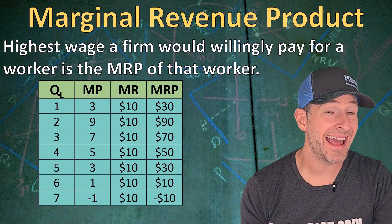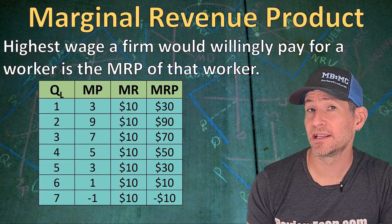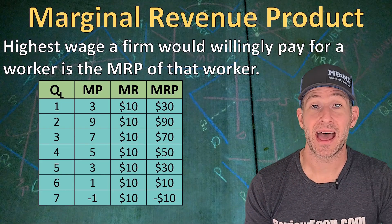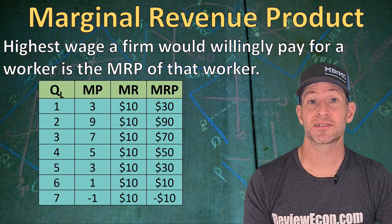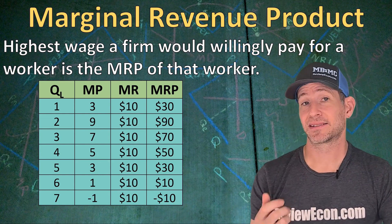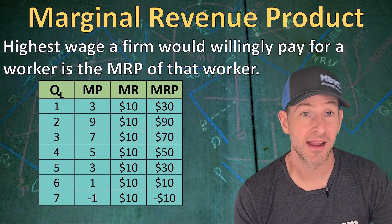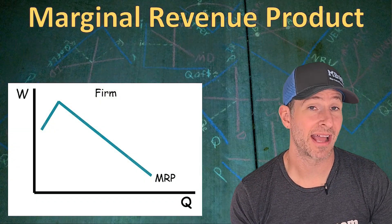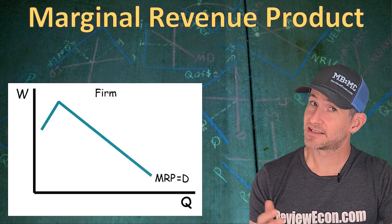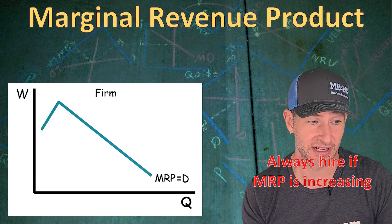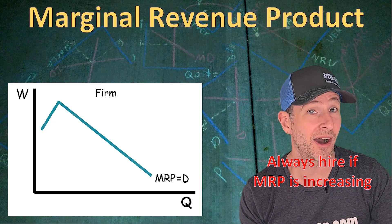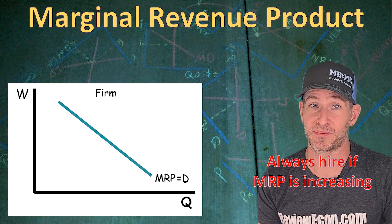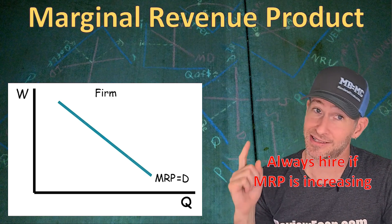When it comes to the marginal revenue product, that is the highest wage a firm would be willing to pay a particular worker. Obviously they'd like to pay less, but this is the maximum they would pay. That third worker has a marginal revenue product of $70, and that's the maximum wage they'd be willing to pay for three workers. Since the marginal revenue product is the highest wage a firm would pay, the marginal revenue product is the firm's demand for labor. So there's our marginal revenue product curve, and we're going to note that it equals demand. Since a firm will always hire workers as long as the marginal revenue product is increasing, I often don't draw in that upward sloping portion of the demand curve — I just use the downward sloping portion.